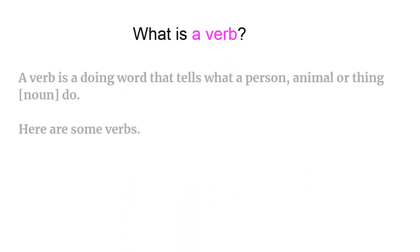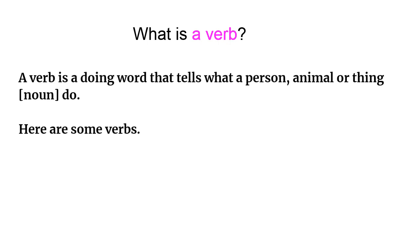What is a verb? A verb is a doing word that tells what a person, animal, or thing do. Here are some verbs.